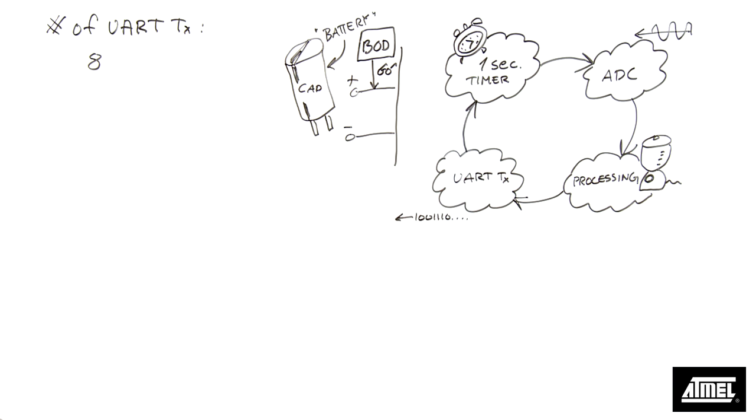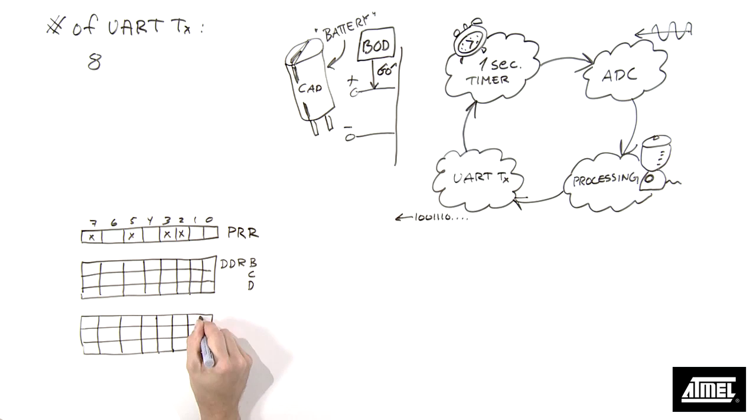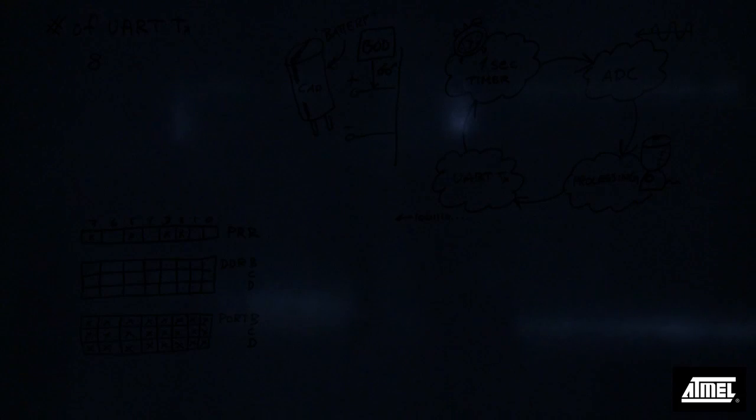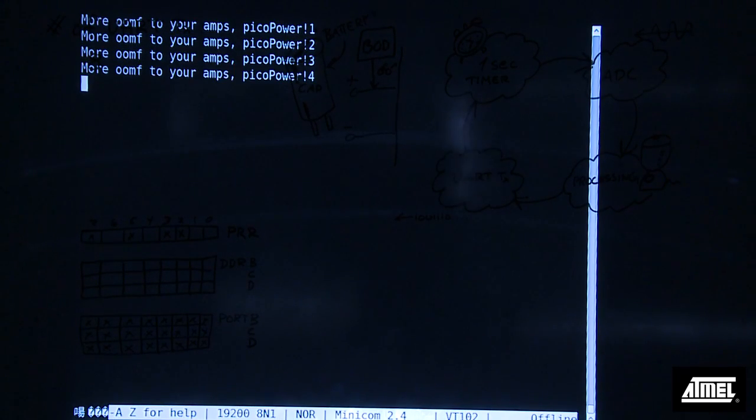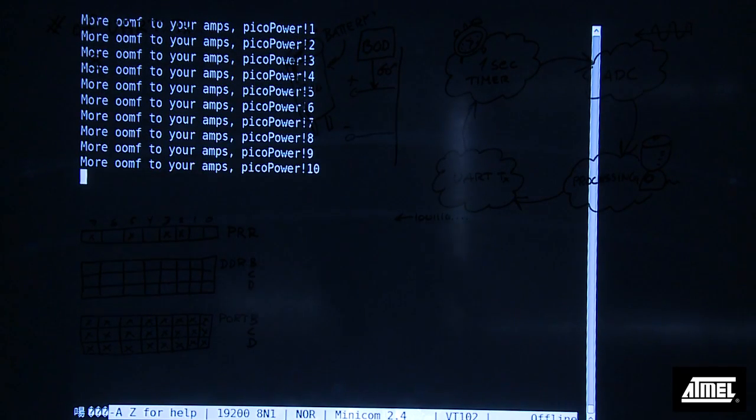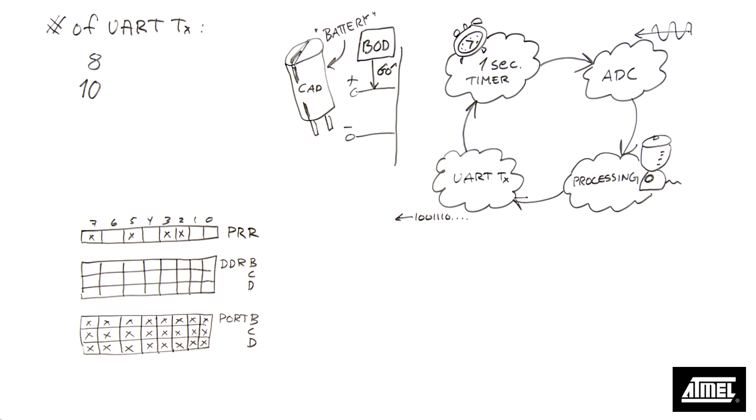Let's apply some power saving techniques. Using the power reduction register, we switch off everything we don't use: timers, analog modules, and all serial communication except the one UART. Also, we make all unused I/O pins inputs with pull-ups. Recharge the power source, and here we go. 10 seconds, so we just extended our battery lifetime with about 25%.